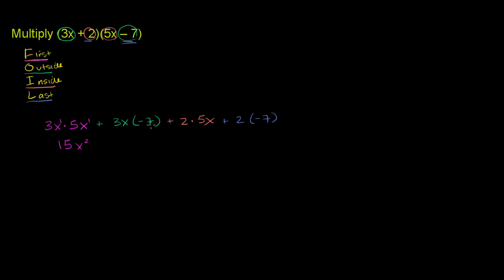This term right here, 3 times negative 7 is negative 21. And then you have your x right over here. And then you have this term, which is 2 times 5, which is 10 times x, so plus 10x.